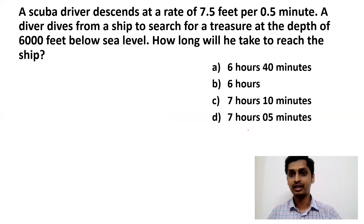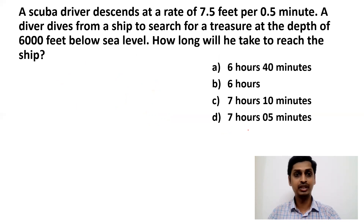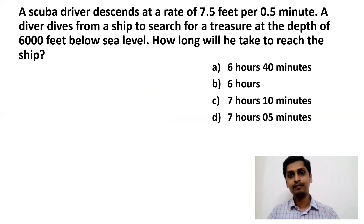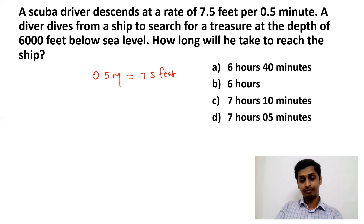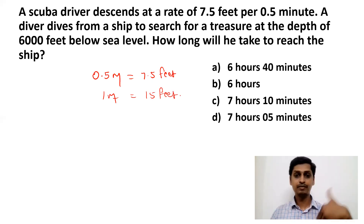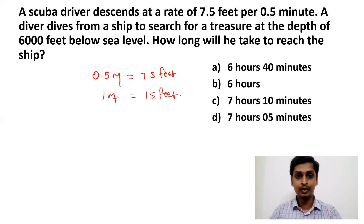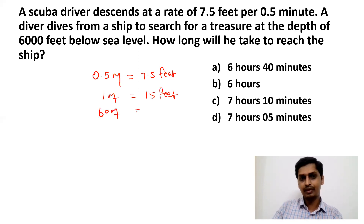Next question: A scuba diver descends at the rate of 7.5 feet per 0.5 minute. A diver dives from a ship to search for treasure at a point 6000 feet below sea level. How long will he take to reach the point? The speed is 7.5 feet per 0.5 minute, which means 15 feet per minute. In 60 minutes (one hour) he covers 15 × 60 = 900 feet per hour.